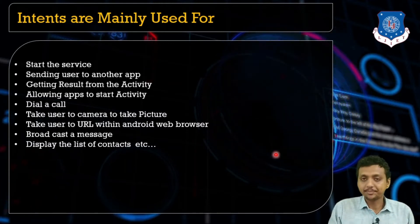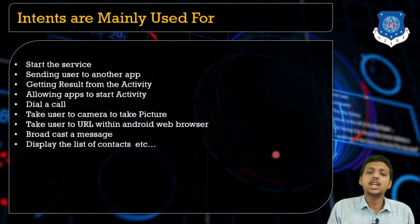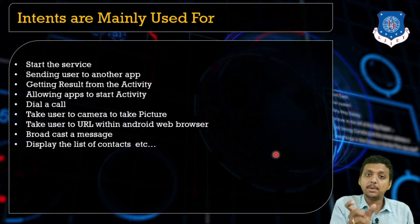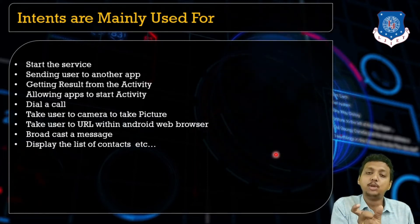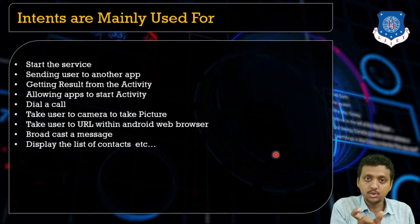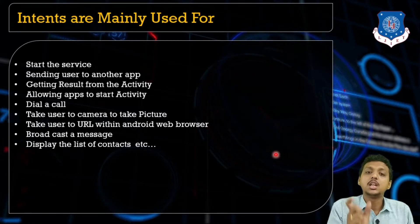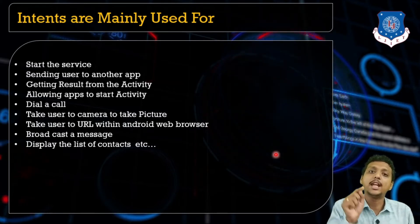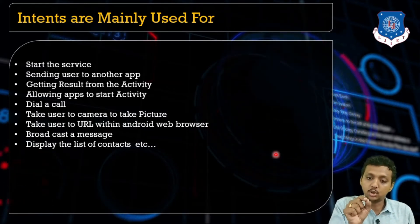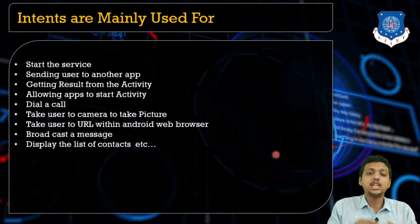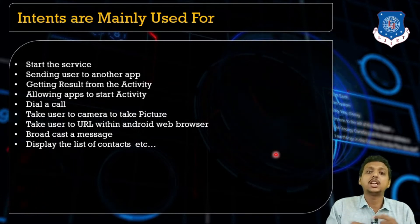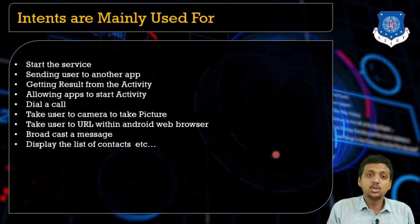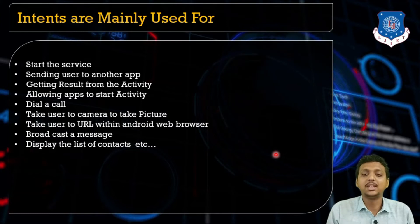For example, when a phone number appears highlighted in blue in WhatsApp, you click on that number and it automatically opens the phone dialer — this is done by intent.